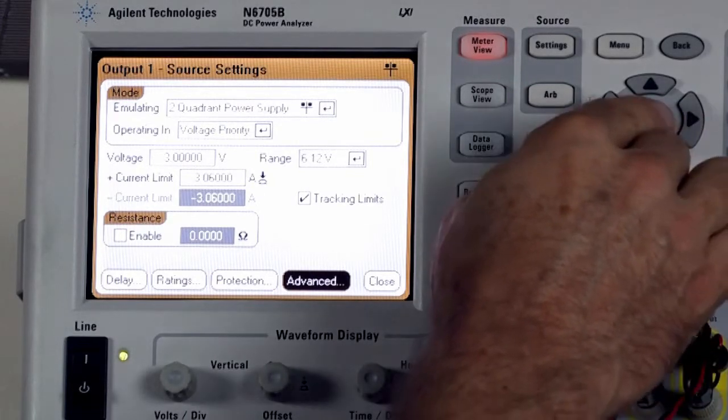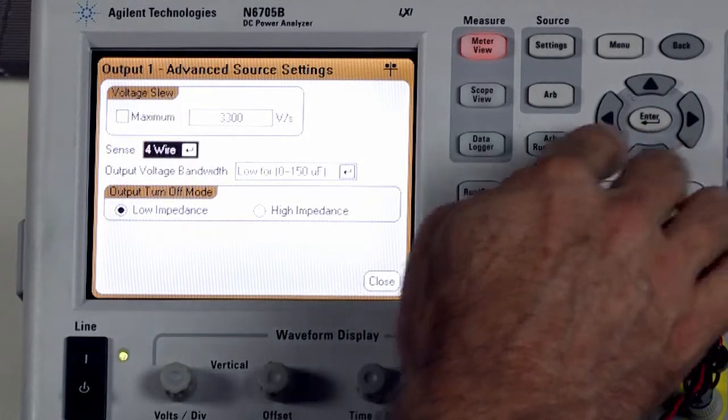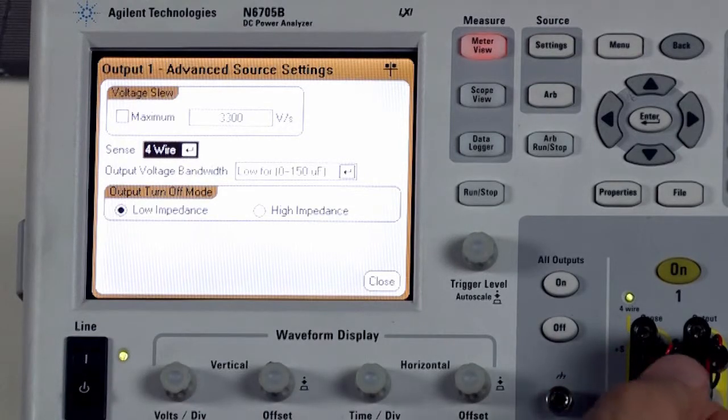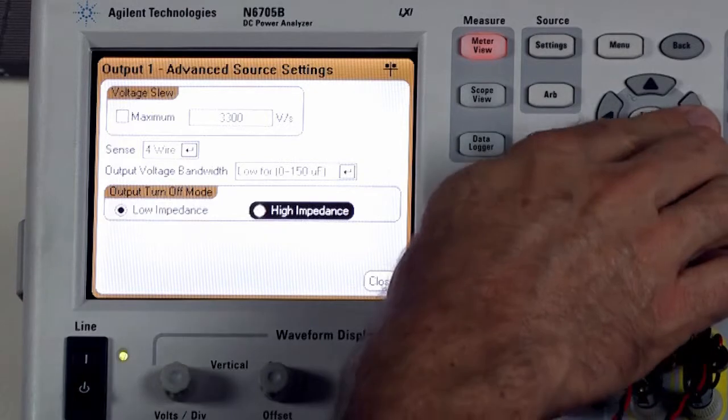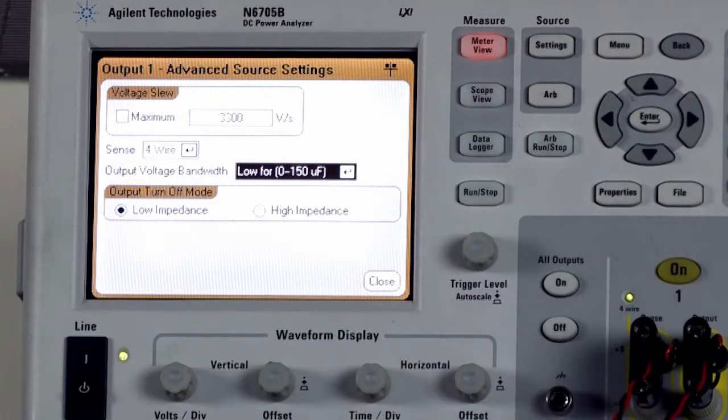So I toggle over there and I go in and look at the advanced menu. I want to verify that we are using the four wire remote sense because we have it wired that way, and I also want to check and make sure that we have this output voltage bandwidth set to low.